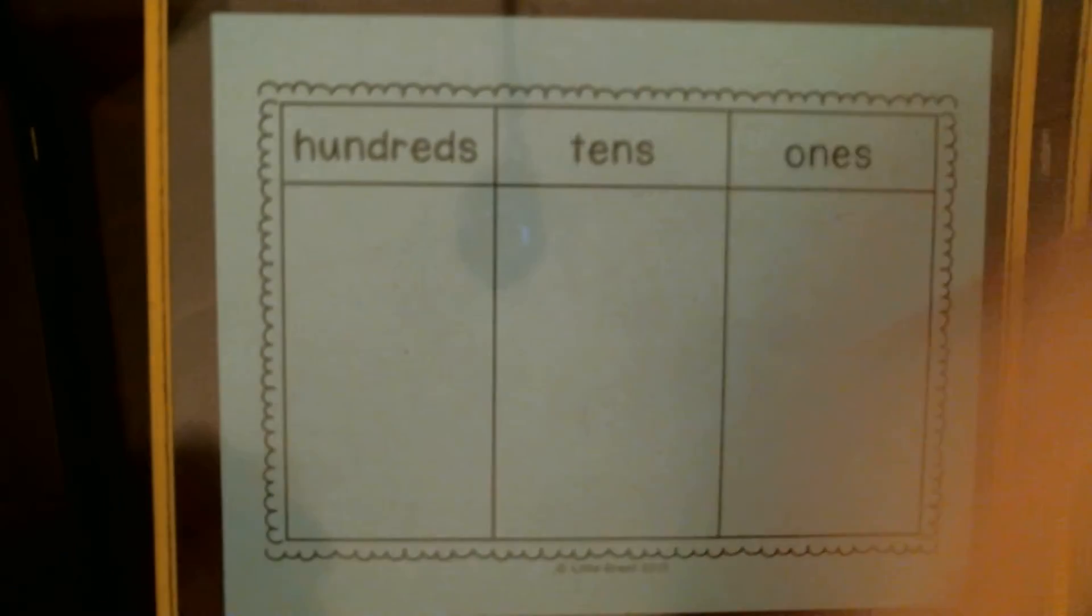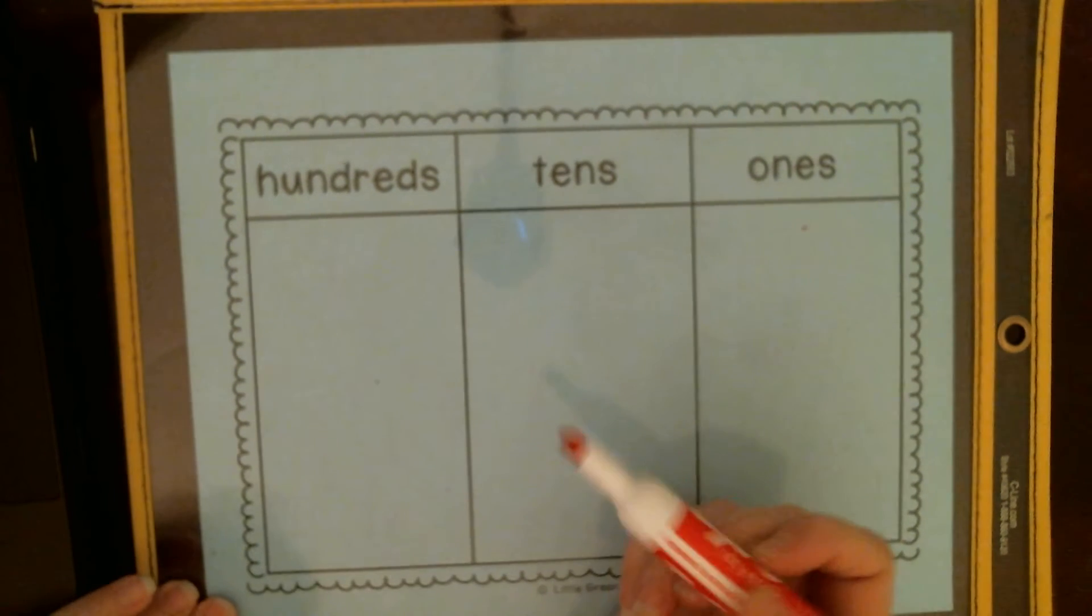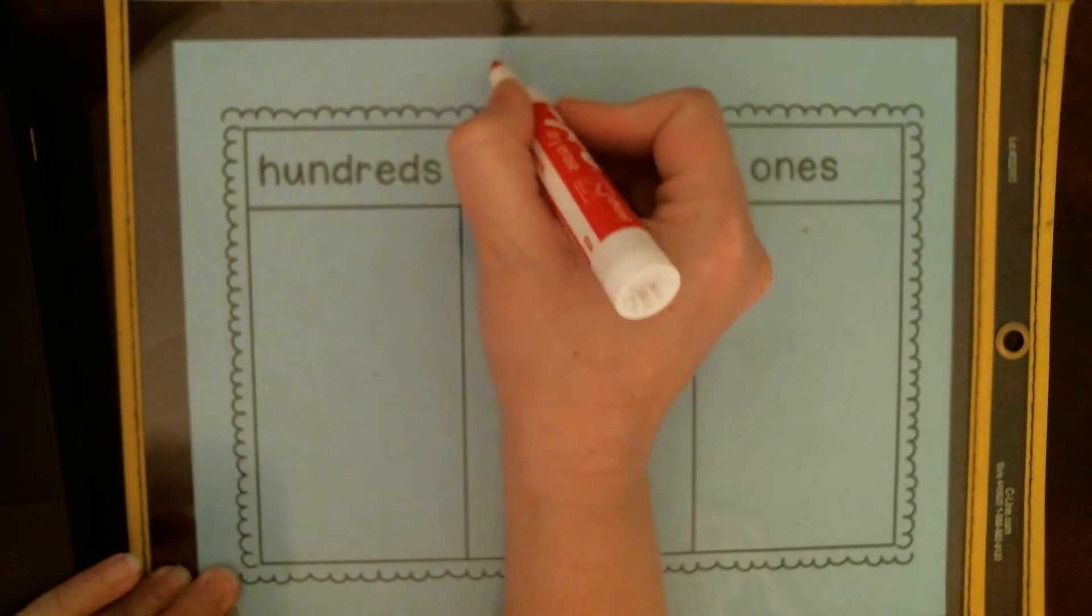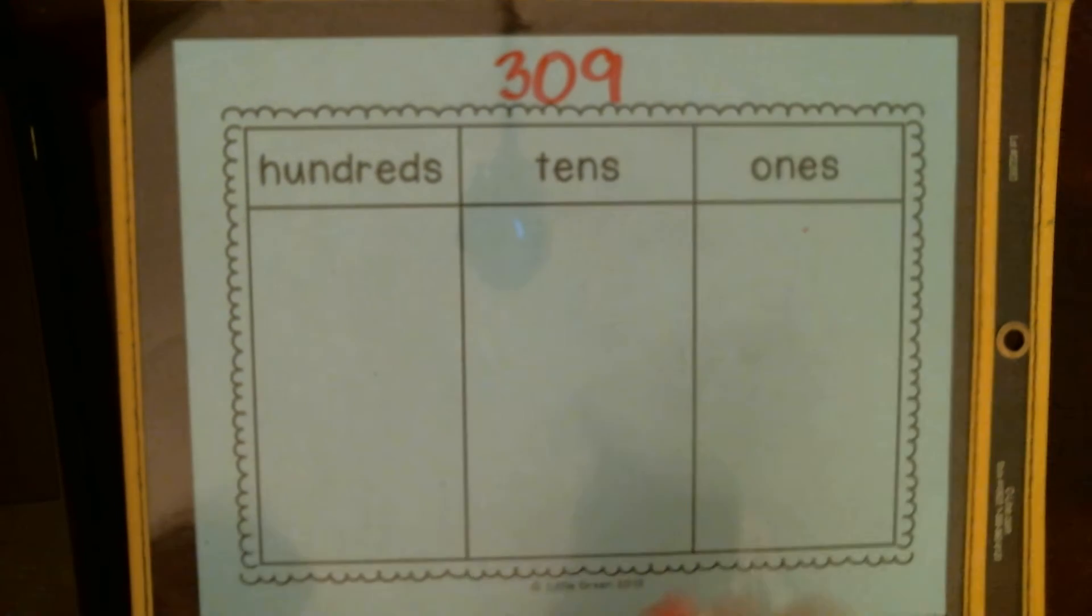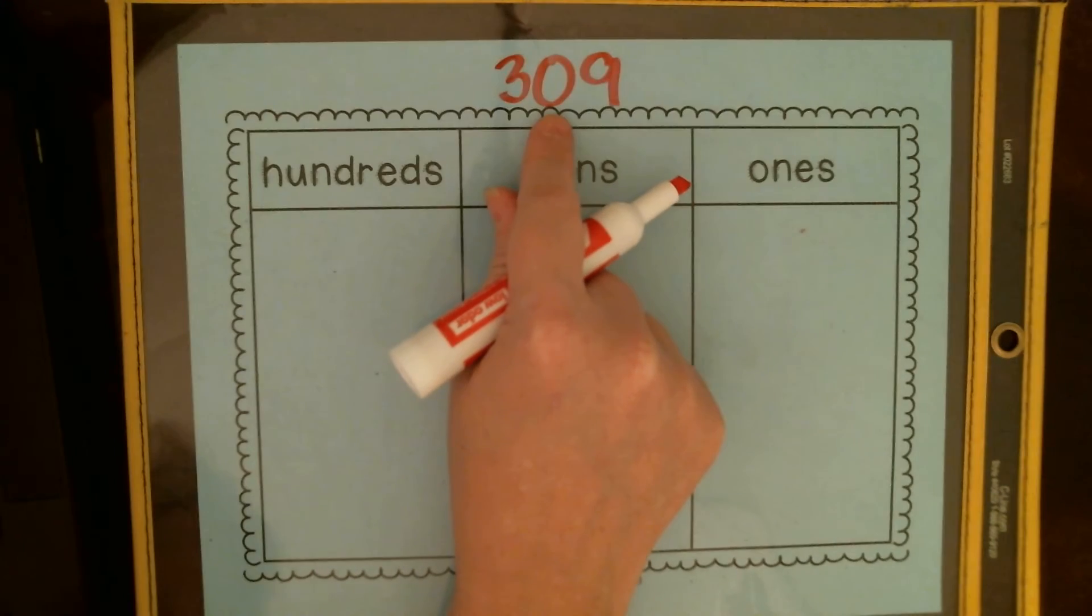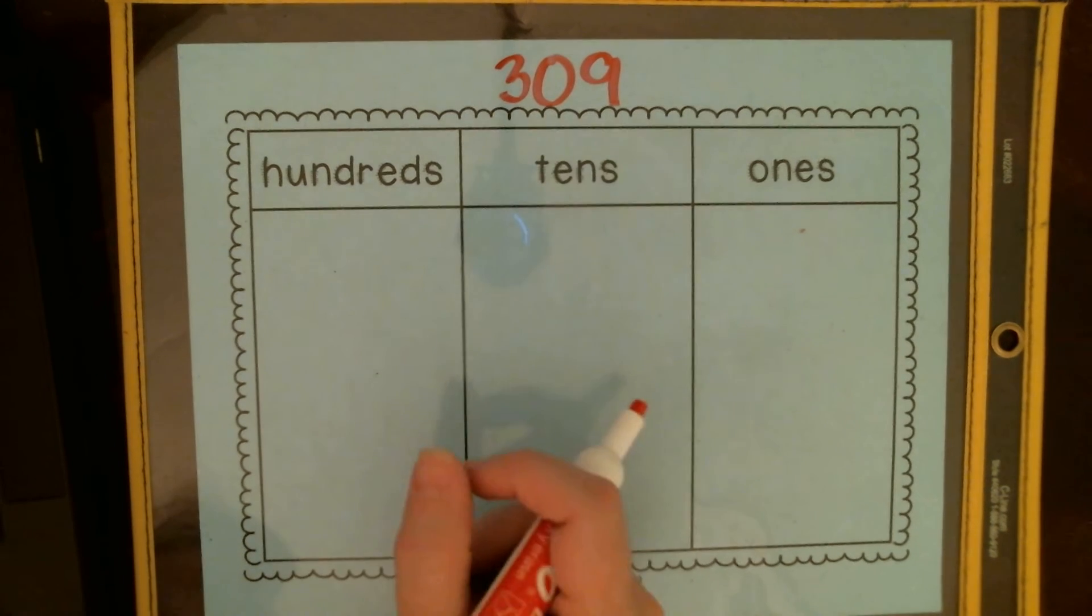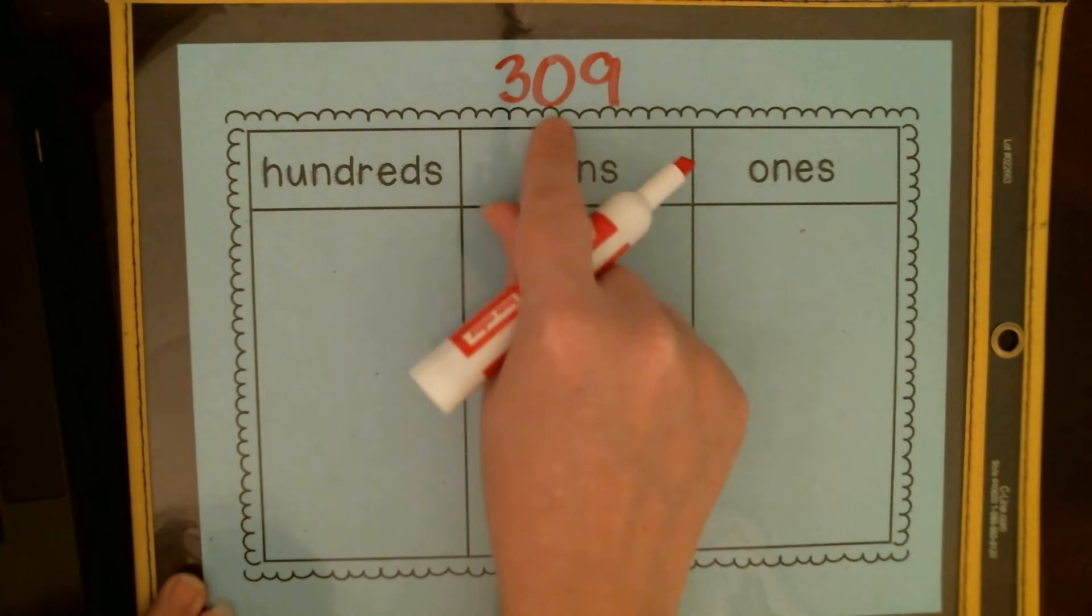All right, let's do another one. Let's think about the number 309. All right, and this is where we get to see how important that zero is. So if I look at my three-digit number, the first number is three.